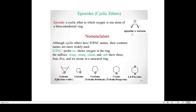This is an example of an epoxide, also referred to as an oxirane. A cyclic ether in which we have an oxygen atom in a three-membered ring is referred to as an oxirane or an epoxide.